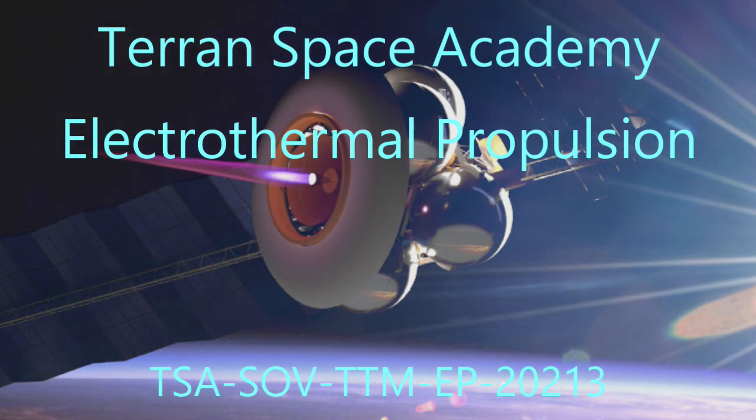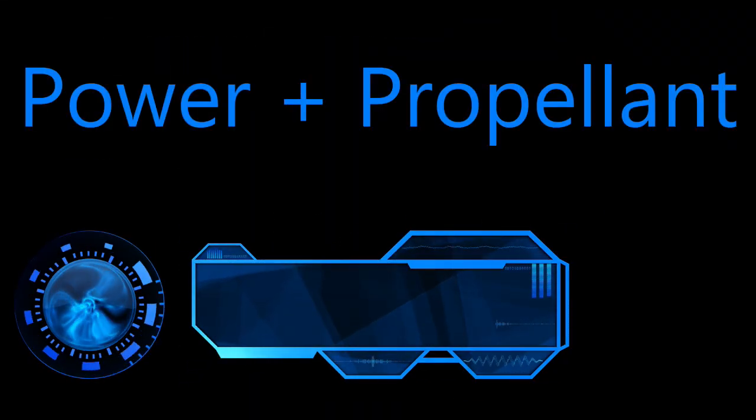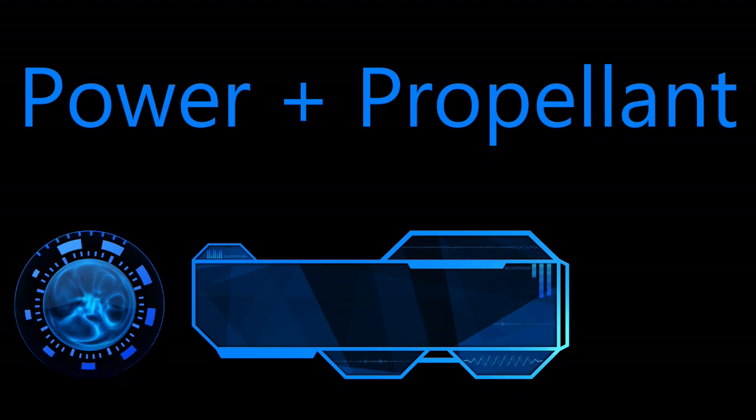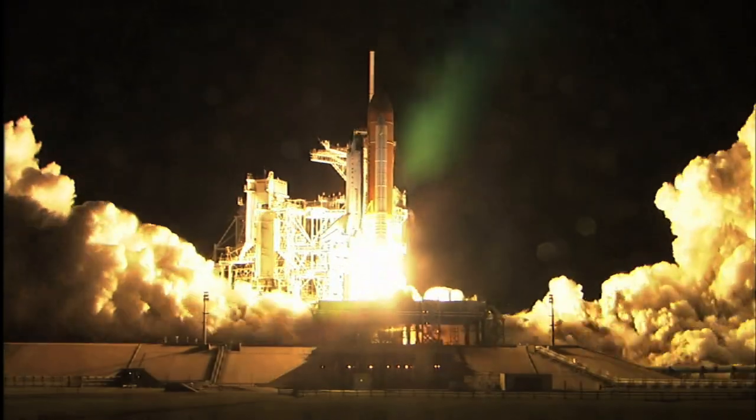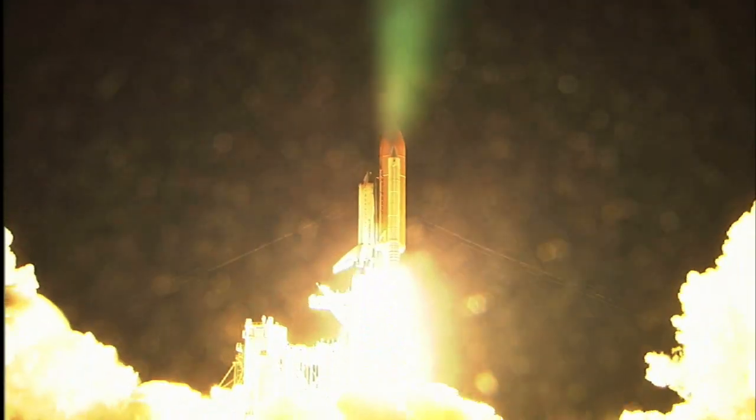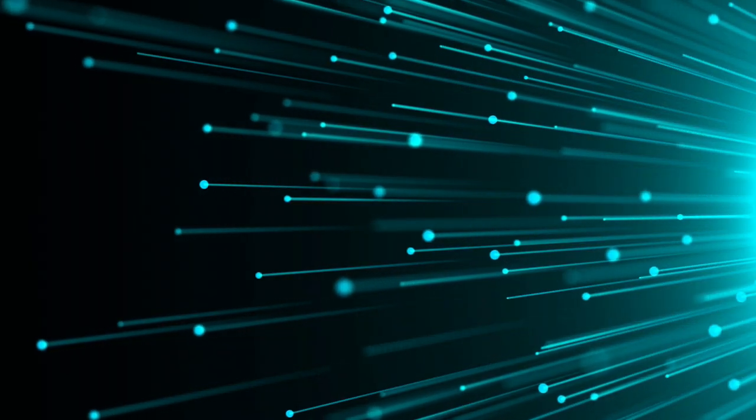All propulsion systems boil down to two components: power and propellant. Until we can manipulate gravity or ride the sun's electromagnetic field lines, the only way to move a spaceship is to throw mass out the back.